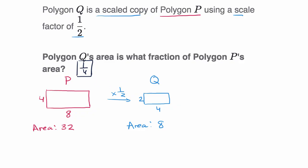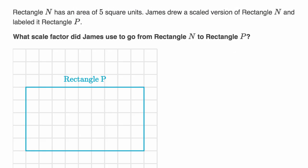Let's do another example. Here we are told rectangle N has an area of five square units. Let me do this in a different color. So rectangle N has an area of five square units. James drew a scaled version of rectangle N and labeled it rectangle P. So they have that right over here. This is a scaled version of rectangle N. What scale factor did James use to go from rectangle N to rectangle P?